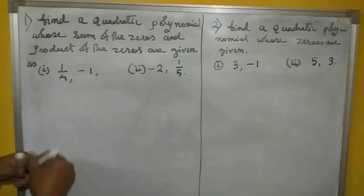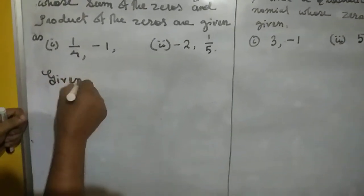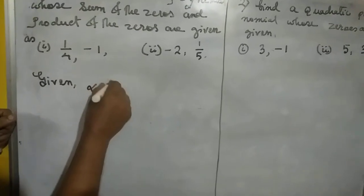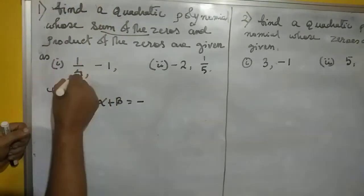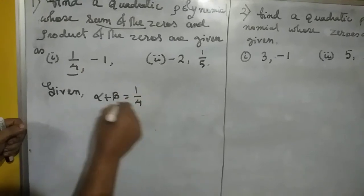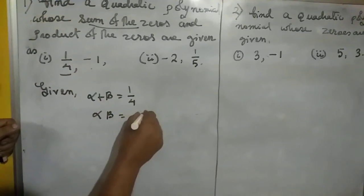So how we will do this one now, suppose. Given, here given is what? Alpha plus beta means sum of the zeros already given. Sum of the zeros is 1 by 4. And the product of the zeros, alpha into beta is given minus 1.